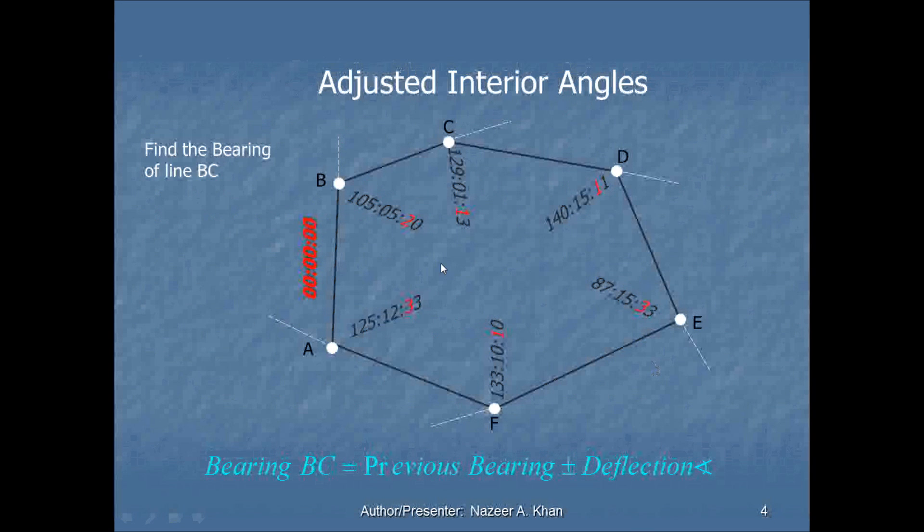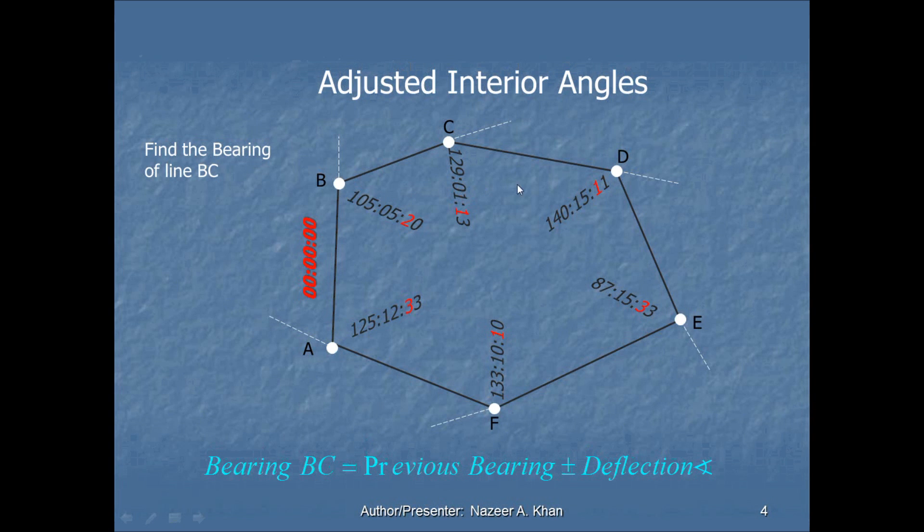As you can see, I've placed the adjusted interior angles into the traverse, and I'm going to go and find the bearing of BC, this line segment here. I need to find the bearing of this line segment. The bearing of BC is equal to the previous bearing plus or minus deflection angle. The plus and minus really means that if we are deflecting clockwise, that is considered to be a plus deflection angle. If we are deflecting counterclockwise, that's a negative deflection angle.